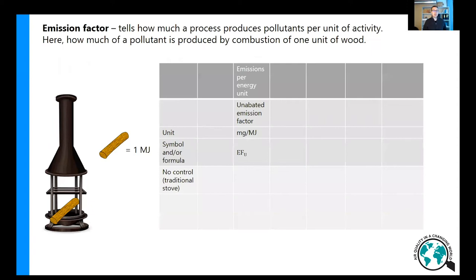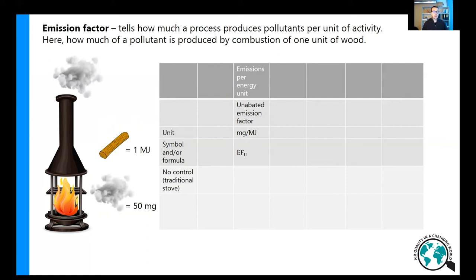First of all, we need to know a factor called the emission factor. The emission factor tells us how much a certain process produces pollutants per certain unit of activity. Here our unit of activity is one megajoule of energy in wood. We can think how many milligrams of, for example, aerosol particles or particulate matter, is emitted when this is burned. If we set on fire this one megajoule of wood and realize that 50 milligrams of particulate matter come out, this would mean that our emission factor is 50 milligrams per megajoule.